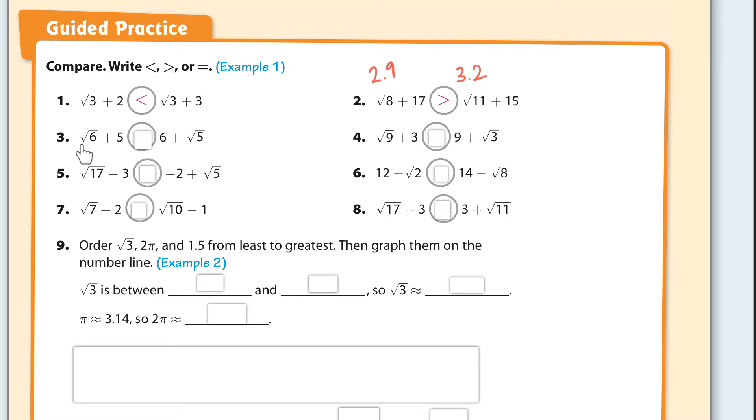For this one, the square root of six plus five versus six plus the square root of five. Well, six is bigger than five, and the square root of six and the square root of five are going to be pretty close to each other. So I'm going to say this one's bigger because it starts off bigger. And here you go.